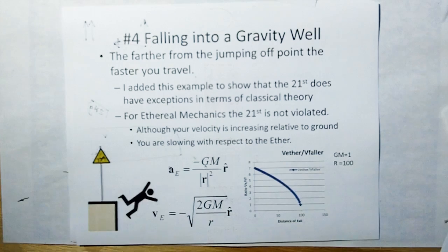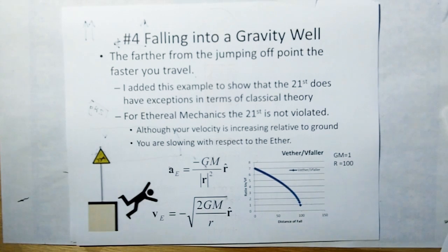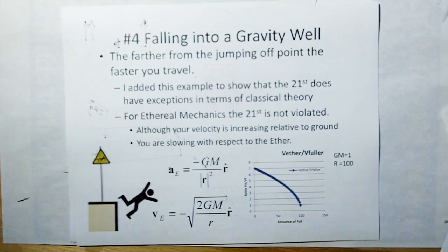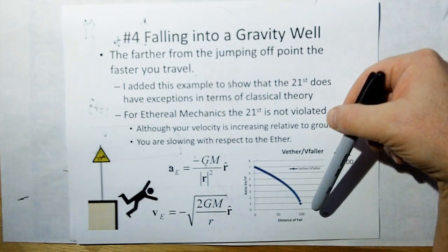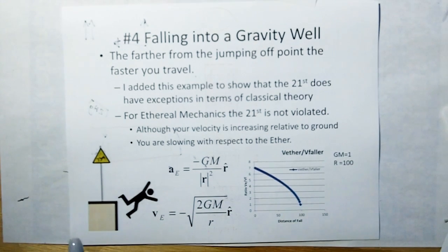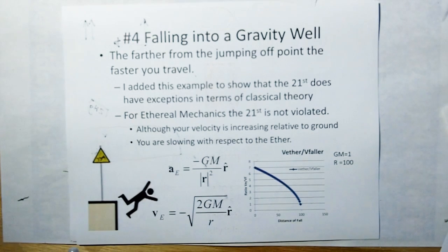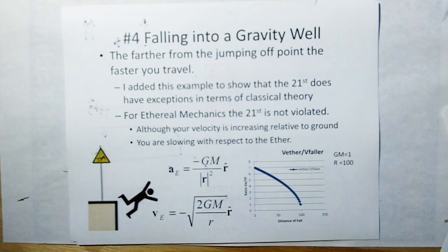Falling into a gravity well — I threw this one in here basically to give an example where the 21st Rule of Acquisition would not apply, just to show that it's a tell, it's not an absolute rule. But then I started thinking — and this is a new discovery as of right now — that for ethereal mechanics there's no violation of the 21st Rule, because as you fall, your velocity relative to the ether diminishes. We're going to be making rules of motion relative to ethereal mechanics that all bodies will move in such a way to reduce their velocity relative to the ether. We have to come up with an explanation for why that happens, but right now we're going to start making rules to supplement ethereal mechanics and have another set of observable things.